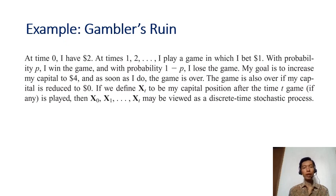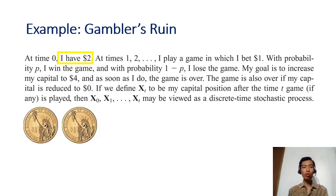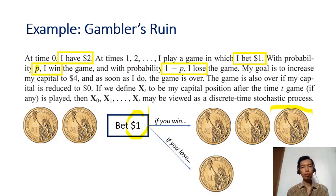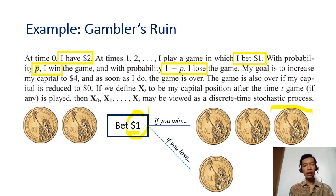Let's see a small example to make the concept of stochastic process more concrete. In this Gambler's Ruin game, at first I have two dollars and I will bet one dollar. If I win with probability p, I get that dollar back plus another dollar, so my money becomes three dollars. If I lose with probability one minus p, I lose that dollar and my money becomes only one dollar. The game is over as soon as I reach four dollars or I have zero dollars left.